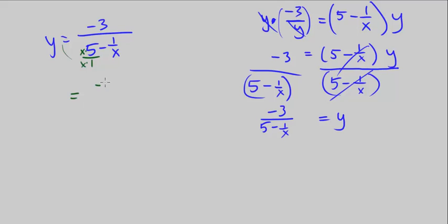That equals negative 3 over the quantity 5x minus 1, all over x. When we have a fraction in the denominator, that's the same as negative 3 times the reciprocal, which is x over 5x minus 1.